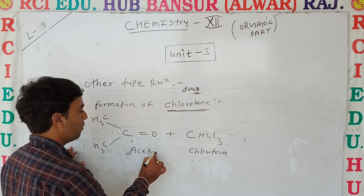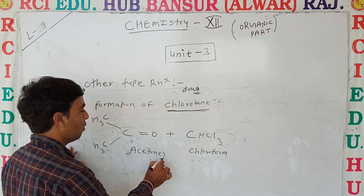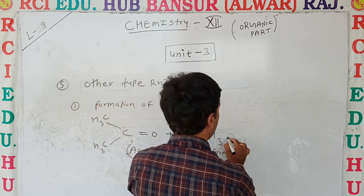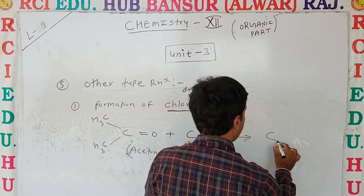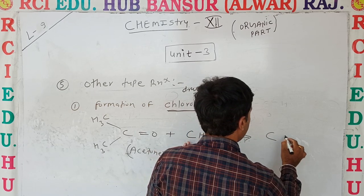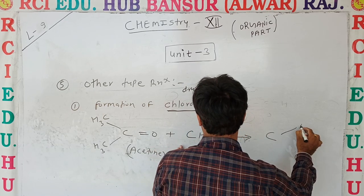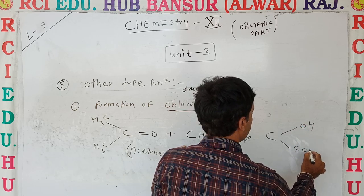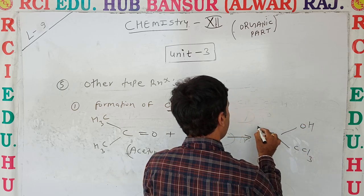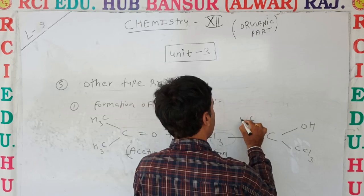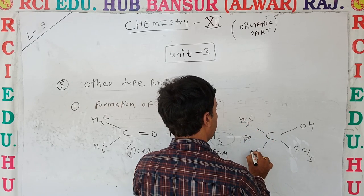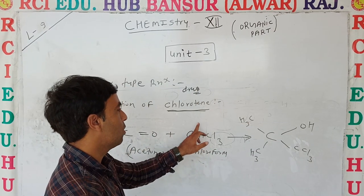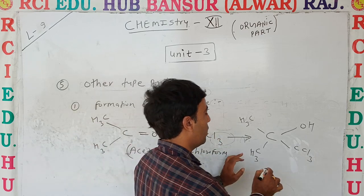Acetone reacts with chloroform, and the formation of a compound — that compound is called chloretone. CCl3 — that is an addition reaction. Very simple reaction. That is called chloretone.